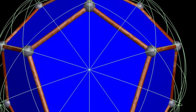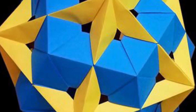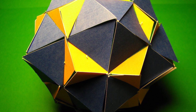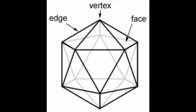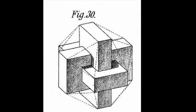The icosahedron is a triangular model of five-fold symmetry in three dimensions, having 20 faces, 12 vertices, and 30 edges, while its dual, the dodecahedron, has a pentacle shape with 12 faces, 20 vertices, and 30 edges.